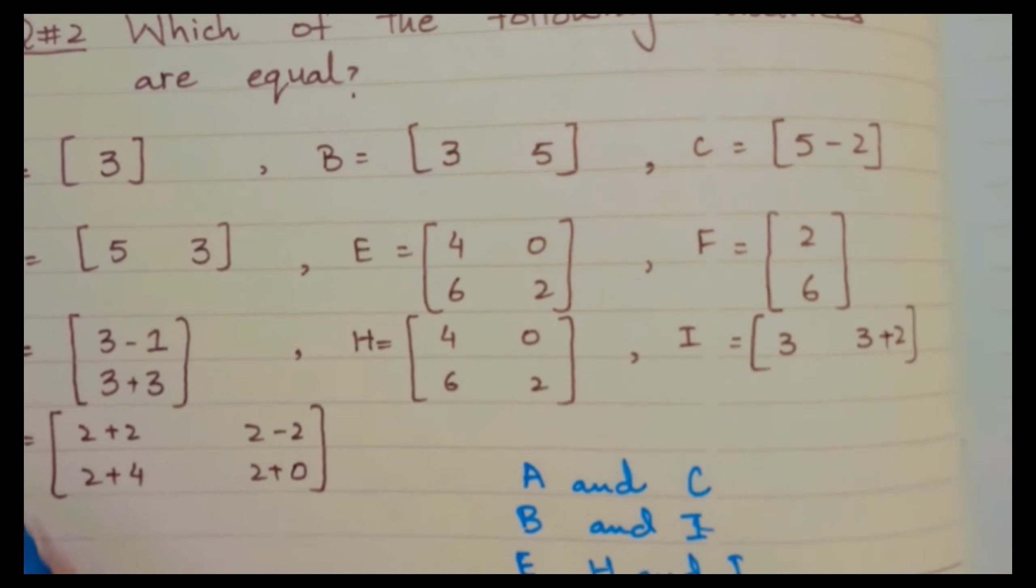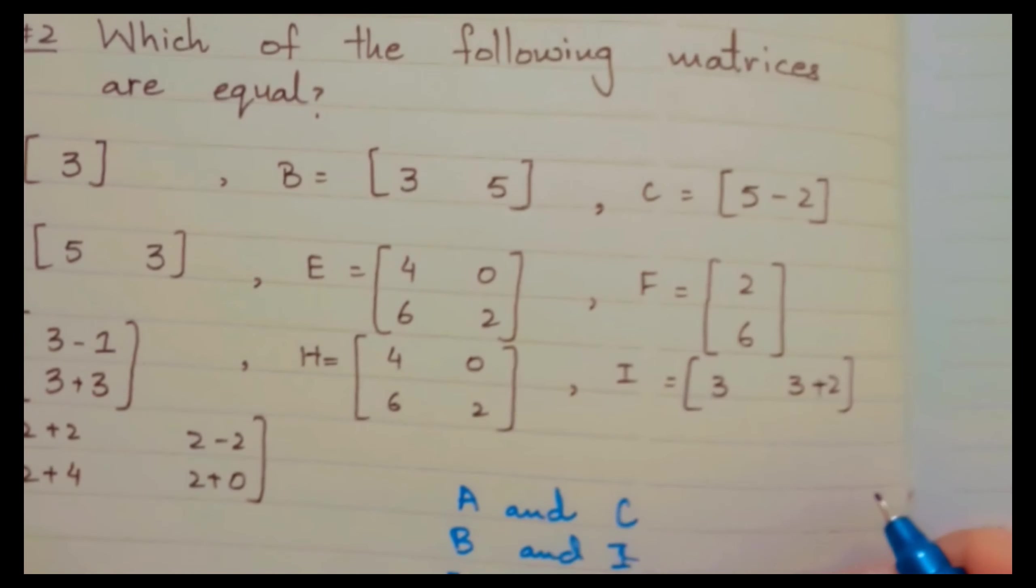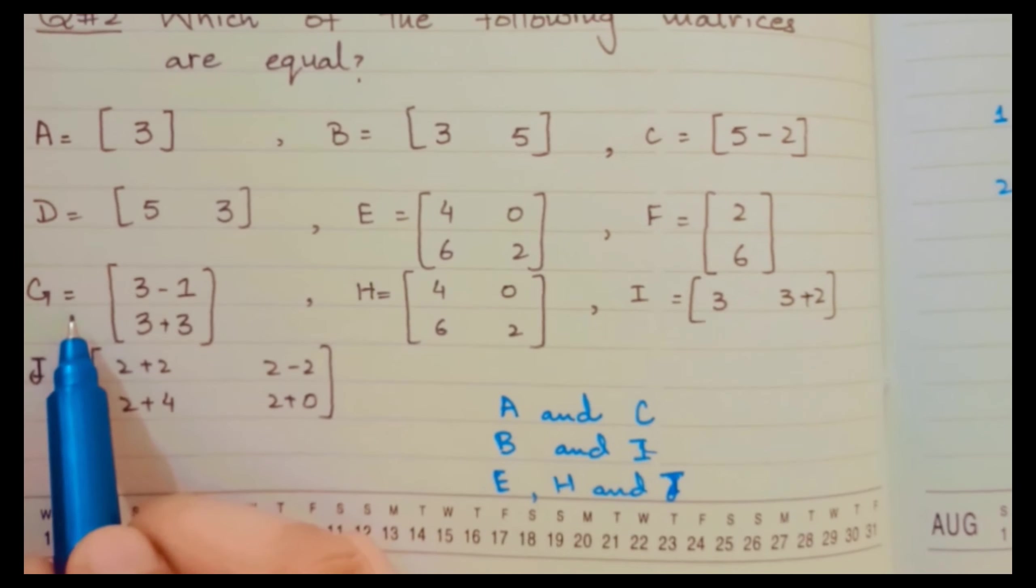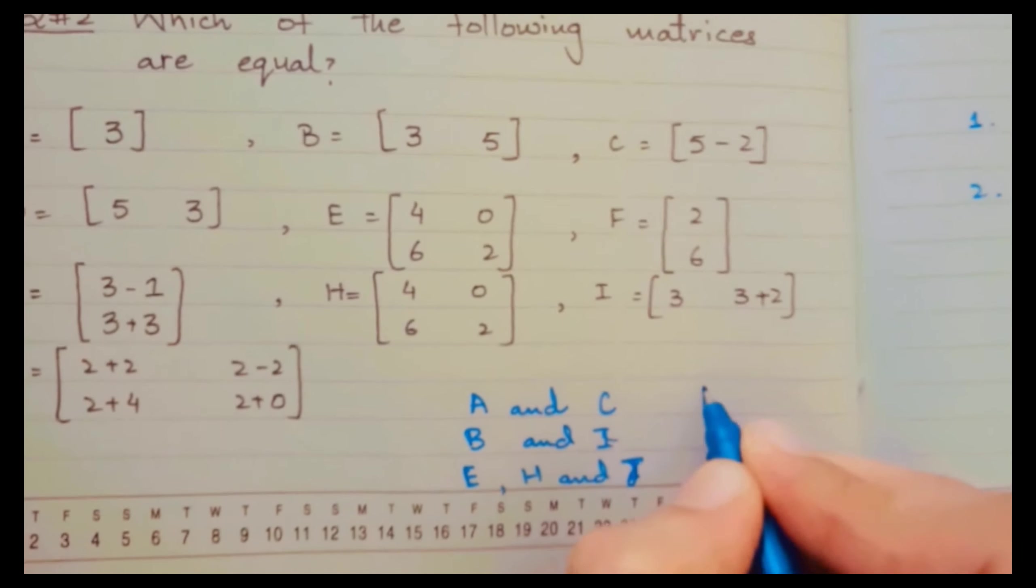Now the matrix F and G are equal because if we subtract 3 minus 1, we can get 2. And if we add 3 plus 3, we can get 6. And F and G matrices both are equal.